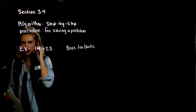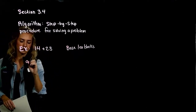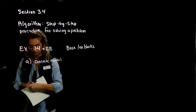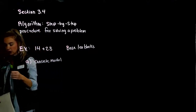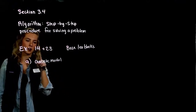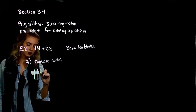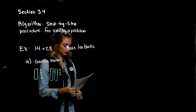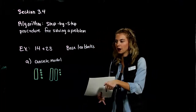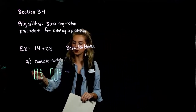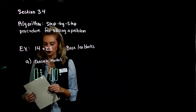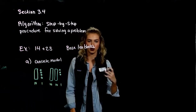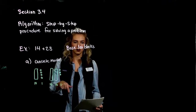When we set up that concrete model with the base 10 blocks, that's always the first thing we want to do. So 14 would look like 1 long and 4 units, and 23 would be 2 longs and 3 units. We naturally group together the longs — the 10 place values — so we've got 3 tens, which is 30. And then 4 and 3 together gives us 37.